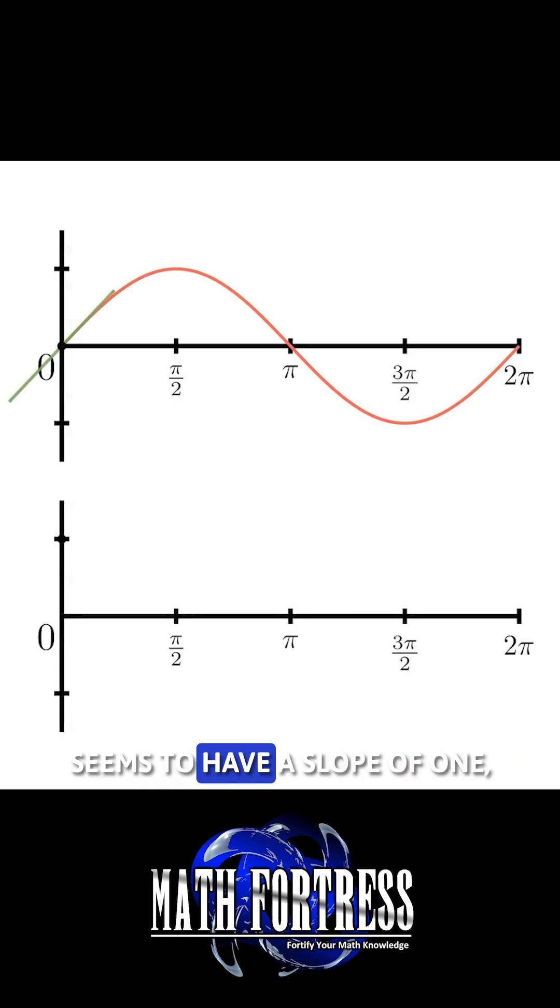The tangent line seems to have a slope of 1. So, the graph of its derivative at x equals 0 will be equal to 1.